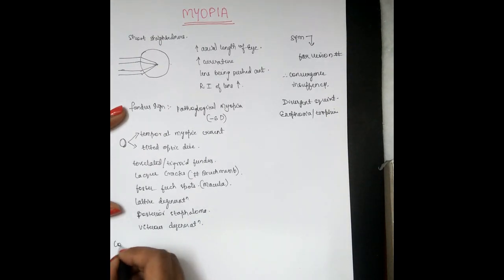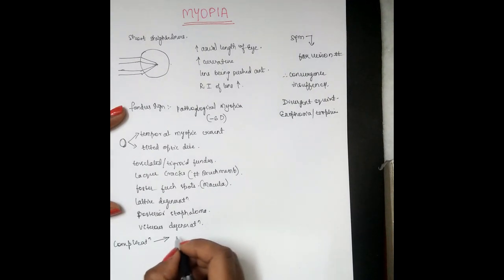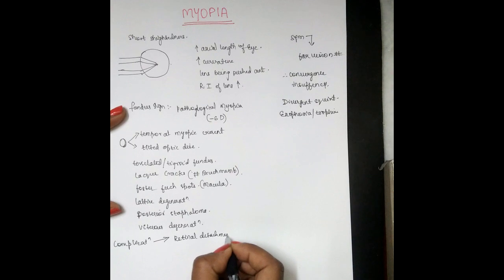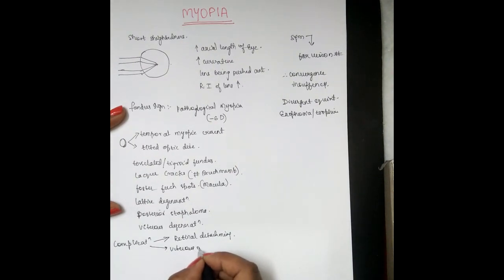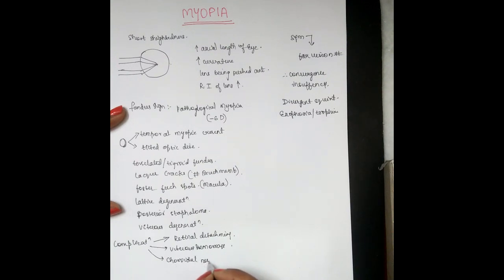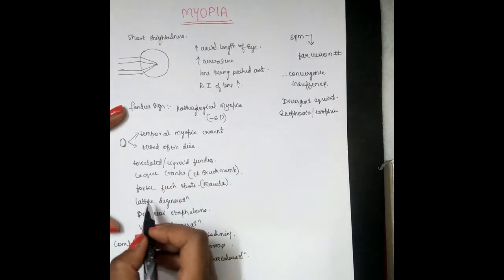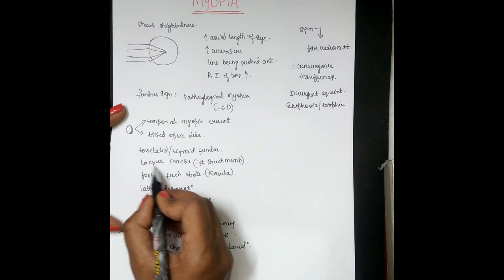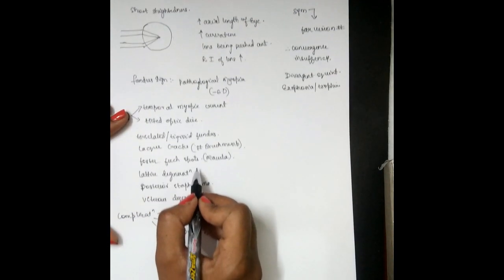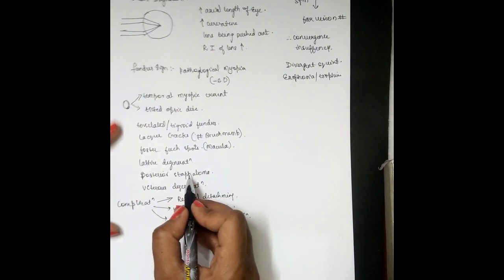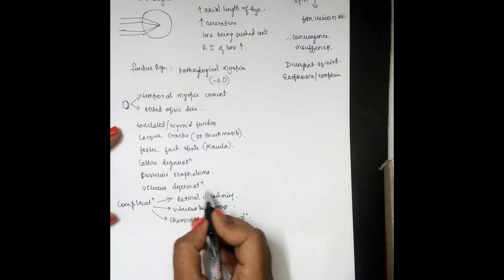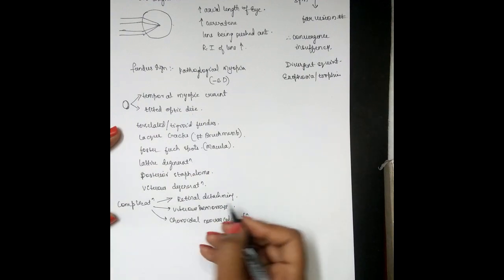Over time it can lead to vitreous degeneration, and this vitreous degeneration may over time lead to complications like retinal degeneration, retinal detachment, vitreous hemorrhage, and choroidal neovascularization. To summarize the fundus changes: temporal myopic crescent, tilted optic disc, tessellated fundus with lacquer cracks, Foster-Fuchs spots, lattice degeneration, posterior staphyloma, vitreous degeneration, choroidal neovascularization, and retinal detachment.